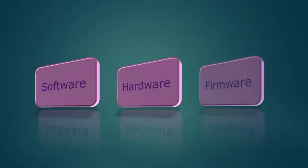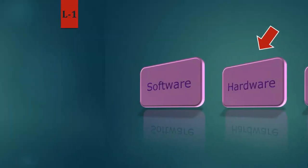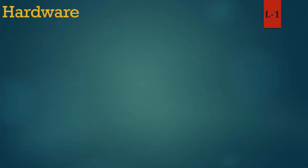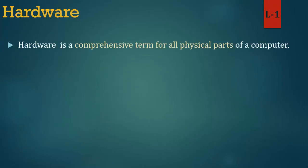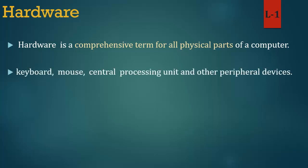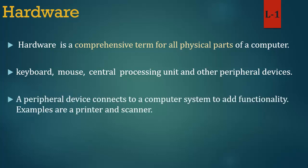Now we learn about hardware in detail. Hardware is a comprehensive term for all physical parts of a computer: keyboard, mouse, central processing unit and other peripheral devices. A peripheral device connects to a computer system to add functionality. Examples are a printer and scanner.